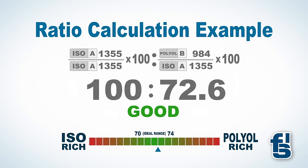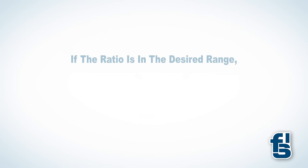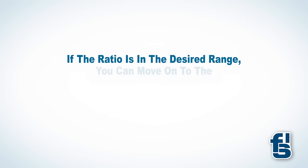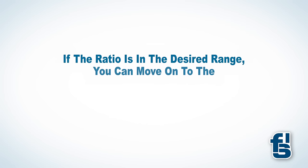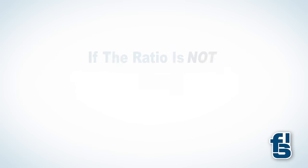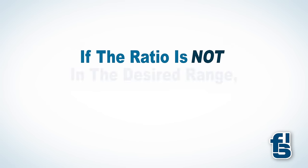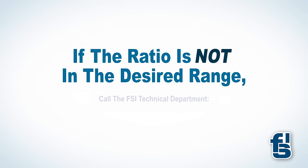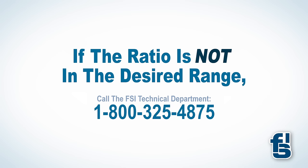In this example, the ratio is within the target range of 70 to 74. If the ratio is in the desired range, you can move on to the throughput procedures. But if the ratio is not in the desired range, call the FSI Technical Service Department, as adjustments may be necessary.